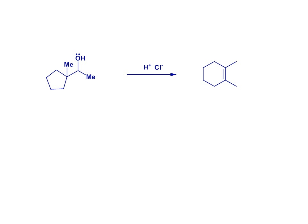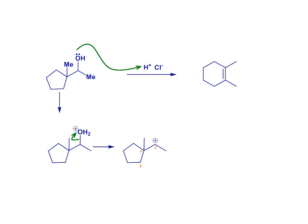In this example, protonation on oxygen starts the reaction — that oxygen lone pair is the most available to react with H+. Loss of water as a good leaving group gives a secondary carbocation. The electrons in the bond between carbon X and carbon Y then migrate to the empty P orbital on carbon Z, as shown with a curly arrow. This generates a tertiary carbocation and a more stable six-membered ring, from which loss of a proton using water or chloride as the base gives us the rearranged cyclohexene product, completing the elimination reaction.